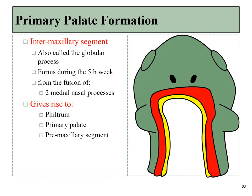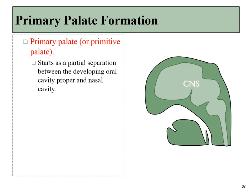So let's start with the palate. Initially, the intermaxillary segment forms when the two medial nasal processes fuse. This also formed the philtrum, but a little bit more posteriorly, it's forming the beginning of the palate. The primary palate begins to develop first, here in mid-sagittal section. We can see that the primary palate begins to separate the nasal cavity up here from what will become the oral cavity down here, but at this time, it's really just one big space.